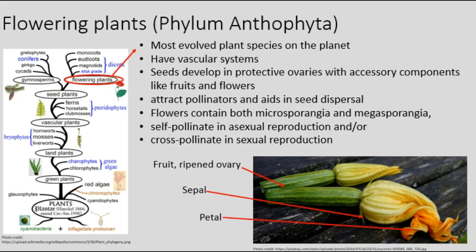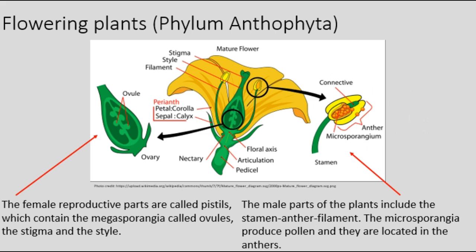Flowering plants, phylum Anthophyta, are the most evolved plant species on the planet. Not only do they have vascular systems, their seeds develop in protective ovaries with accessory components like fruits and flowers that both attract pollinators and aid in seed dispersal. Flowers contain both microsporangia and megasporangia, which can self-pollinate in asexual reproduction and cross-pollinate in sexual reproduction. The male parts include the stamen-anther-filament complex; the microsporangia produce pollen and are located in the anthers. The female reproductive parts are called pistils, which contain the megasporangia — called ovules — the stigma, and the style. Nectar is secreted from the pistil near the ovary, facilitating pollen transfer.